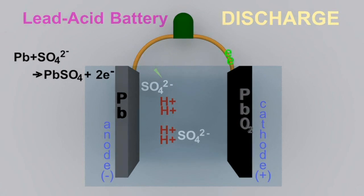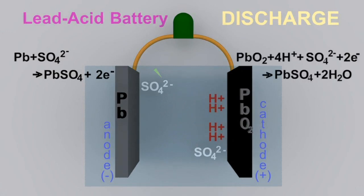Now the reaction at the cathode is, well, something has to happen to those other parts of the electrolyte. Four protons and the sulfate ion go over to that lead four oxide cathode and undergo that equation there.